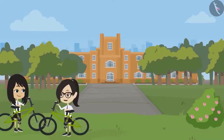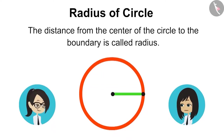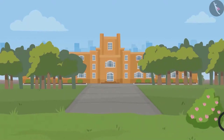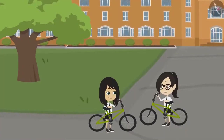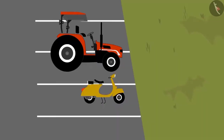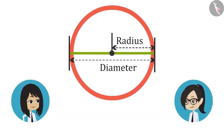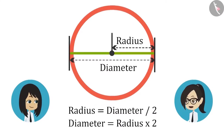Now, remains the radius. The distance from the center of the circle to the boundary is called radius. To measure the circle, you can measure either radius or diameter, but radius will be easier to measure because it is smaller than diameter. Yes, it is not only small, but it is half. Sir told that the radius is diameter divided by 2, which means diameter is equal to 2 times the radius.